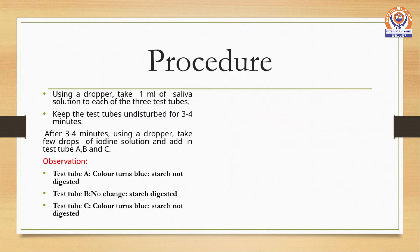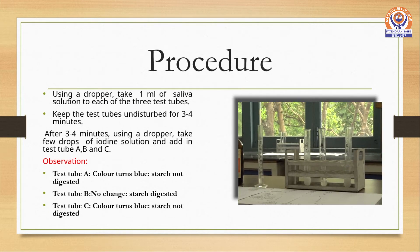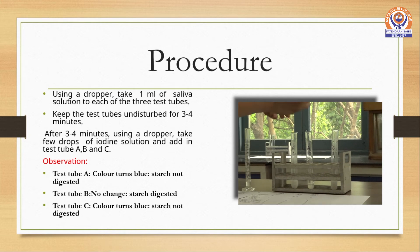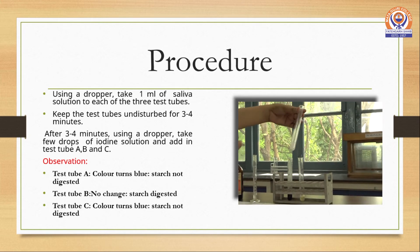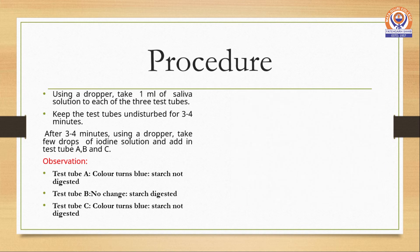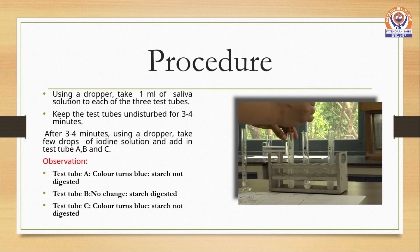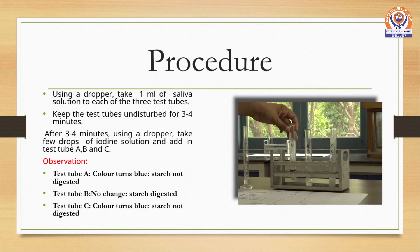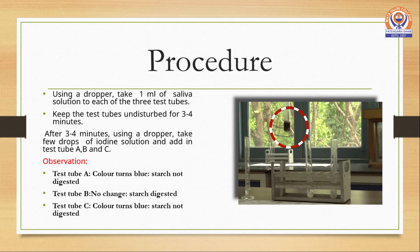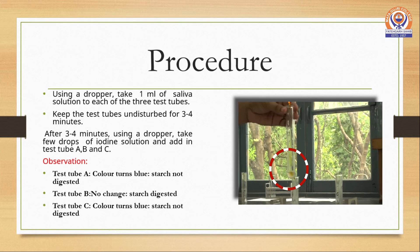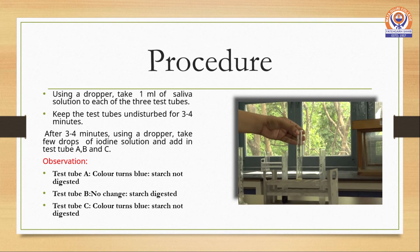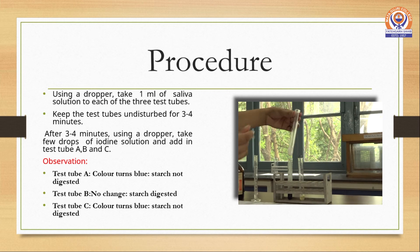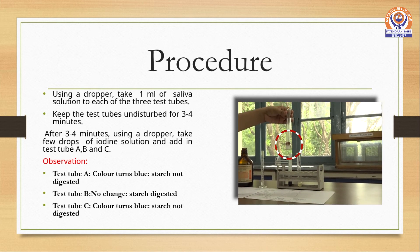Then we would be adding iodine solution dropwise to each tube A, B and C. When we add iodine solution to test tube A, the colour turns blue. While in test tube B, the colour remains unchanged. And in test tube C, the colour again turns blue.